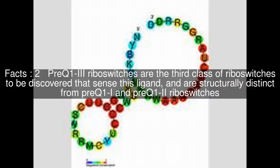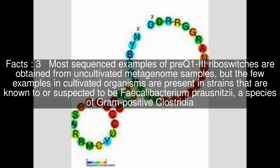PreQ1-3 riboswitches are the third class of riboswitches to be discovered that sense this ligand, and are structurally distinct from PreQ1-1 and PreQ1-2 riboswitches. Most sequenced examples of PreQ1-3 riboswitches are obtained from uncultivated metagenome samples,